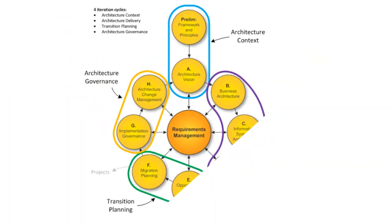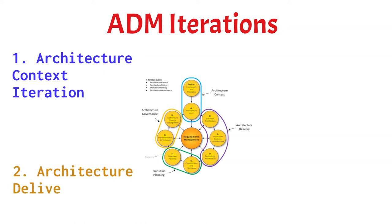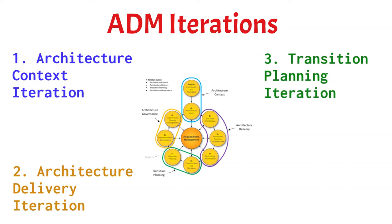The figure in front of us is a depiction of the ADM iterations. It's actually a complete set of ADM phases grouped into four. The first is the architecture context iteration, which sets the background for implementation of architecture work. Second is the architecture delivery iteration, which is a set of steps that will show us a model that we are going to be working with. The third is the transition planning iteration, a set of steps where we begin to deploy or plan to deploy what we have designed. And the fourth is the architecture governance iteration, which provides guidance on how we align with our company's policies and standards.